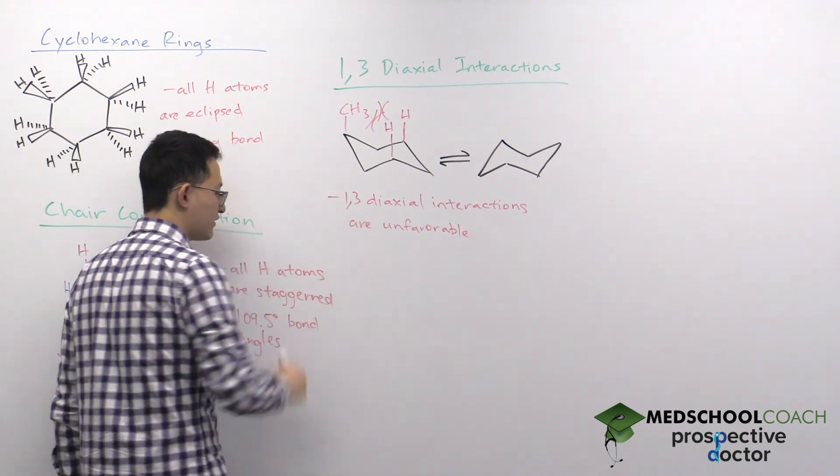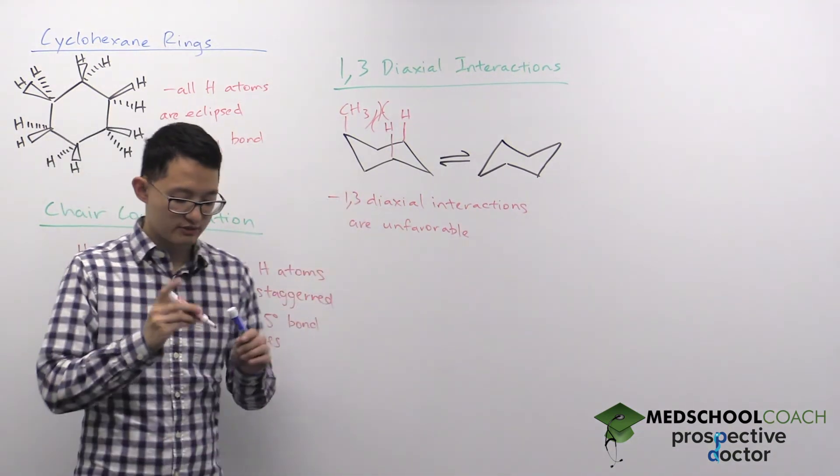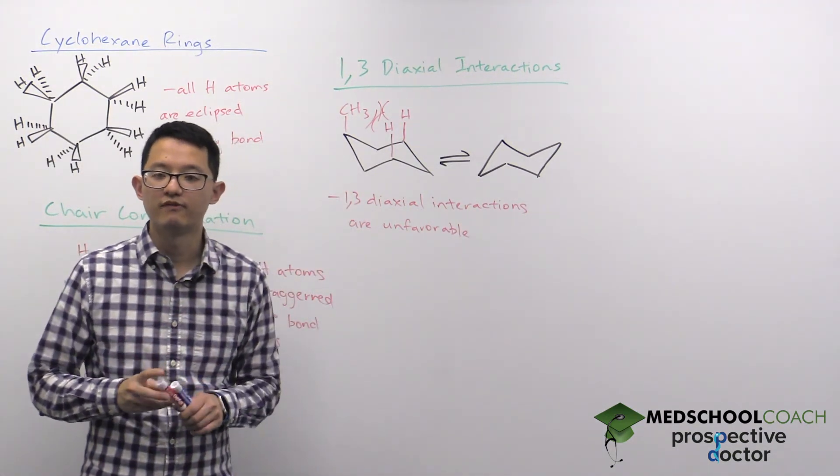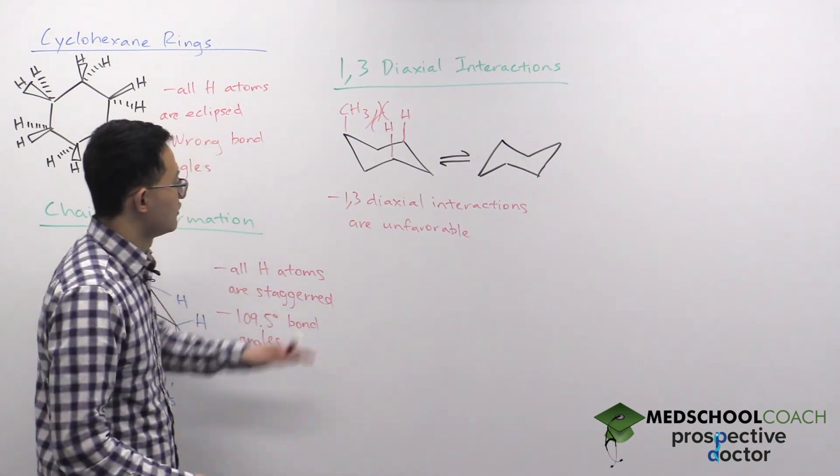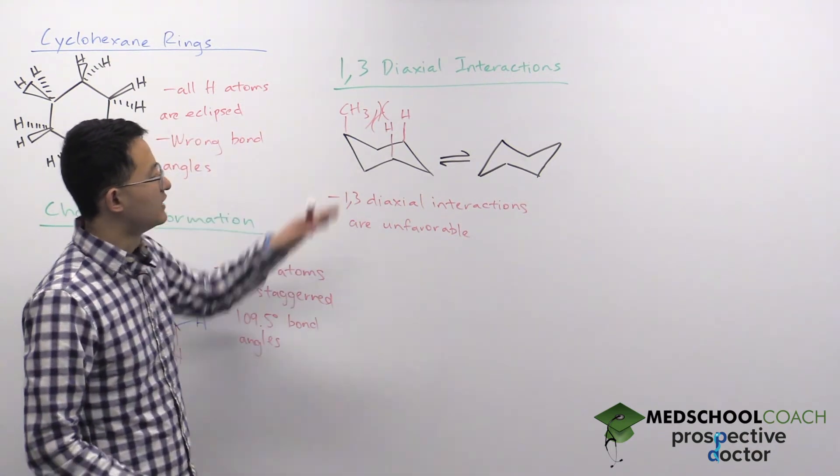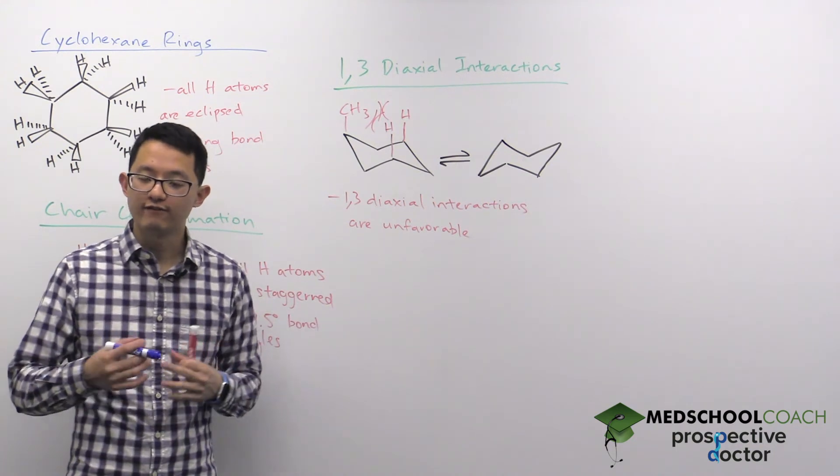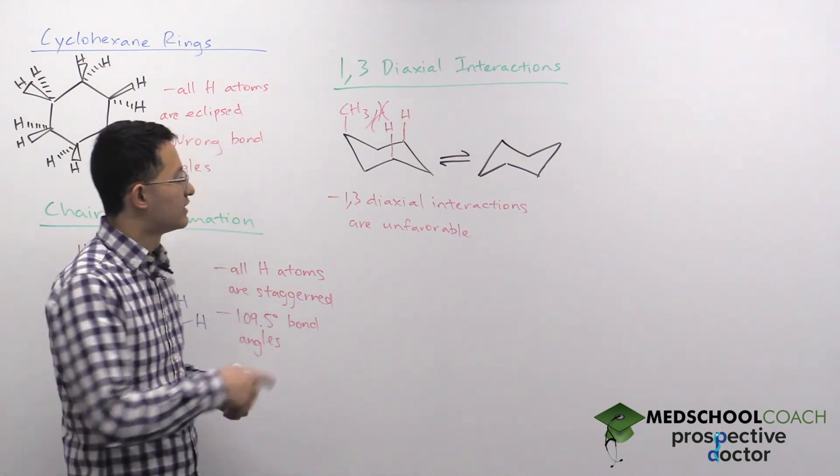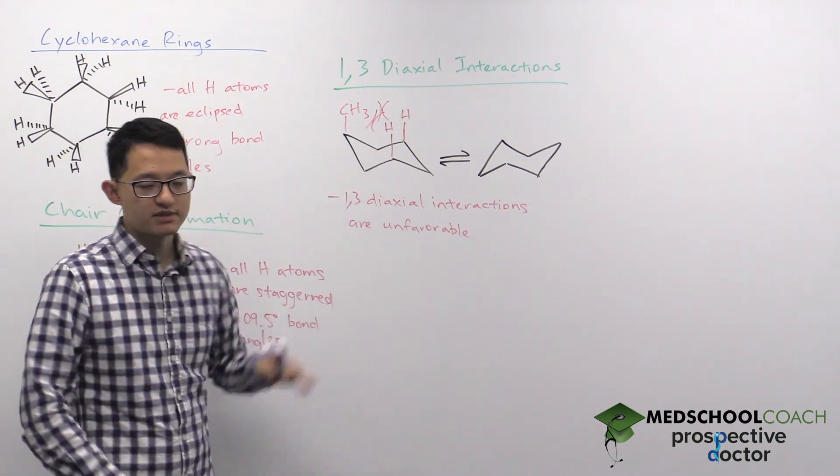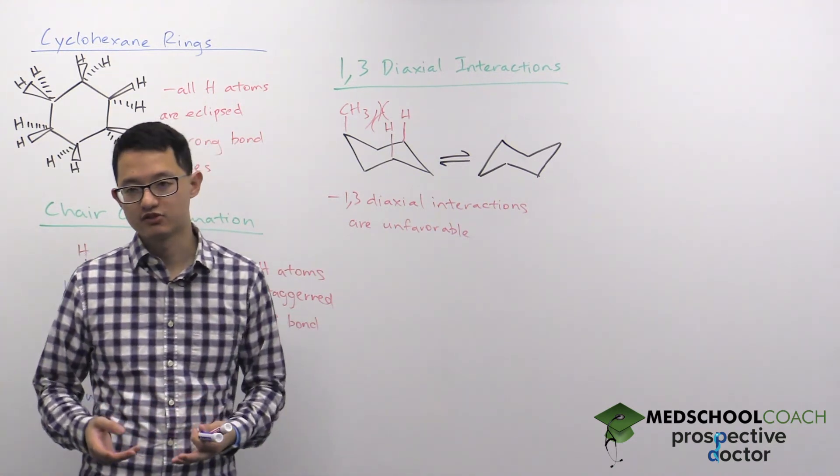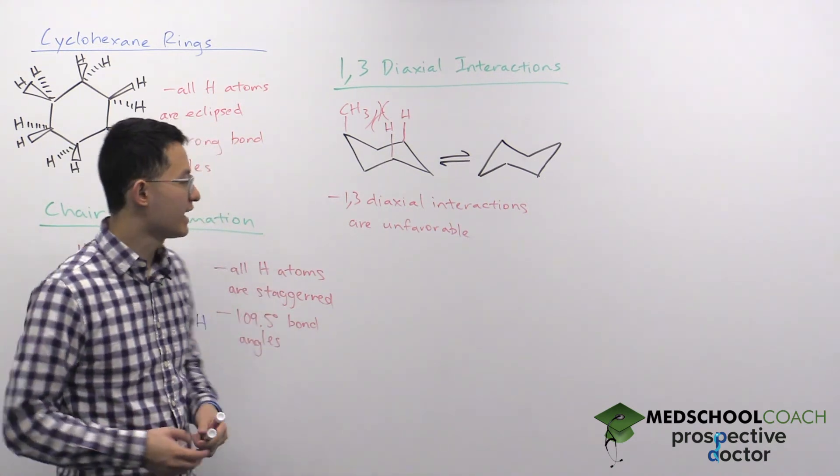The good news is when you have a substituent that is axial, it is possible to do a chair flip. What I mean is that this ring can actually flip, and when it flips, the positions of all the atoms that are axial become equatorial, and all the substituents that are equatorial now become axial.